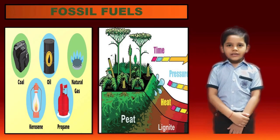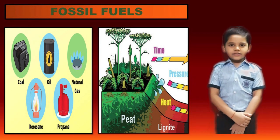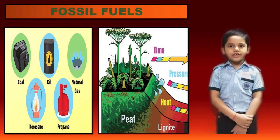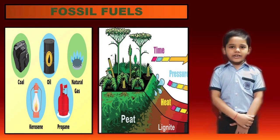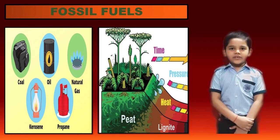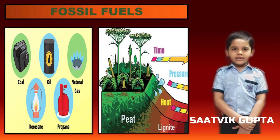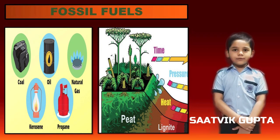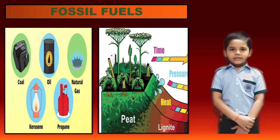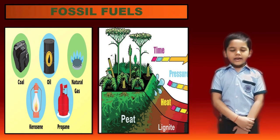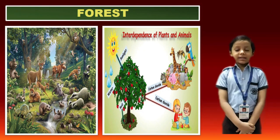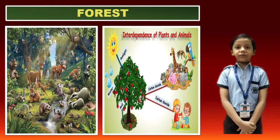Fossil fuels like coal, crude oil and natural gases can be burned for energy. These fuels are formed from the buried remains of plants and animals that lived millions of years ago. These fuels have a high carbon content. Once burnt, these cannot be reused as fuel. About 31% of the Earth's land surface is covered with forests.